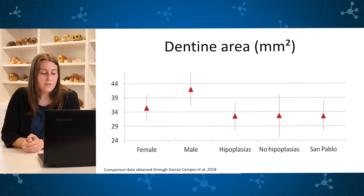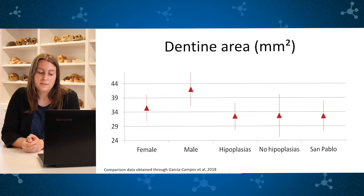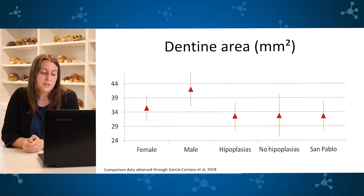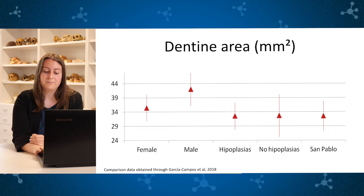In this other graph, we represent the dentine area. As in previous graphs, the values presented by the individuals of San Pablo are lower than those obtained by Garcia Campos and Collette.